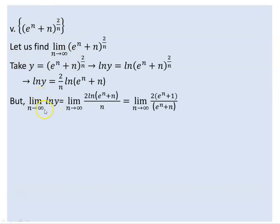We find the limit of ln y as n goes to infinity. This becomes 2 times ln(2/n) times n over n as n goes to infinity, which is an indeterminate type of limit. We differentiate the numerator as well as the denominator with respect to n. The derivative of ln is 1 over the expression, times the inner derivative.